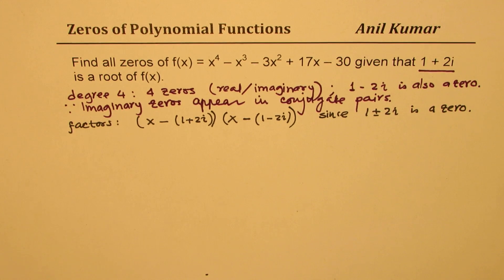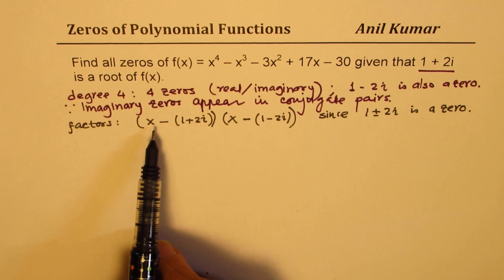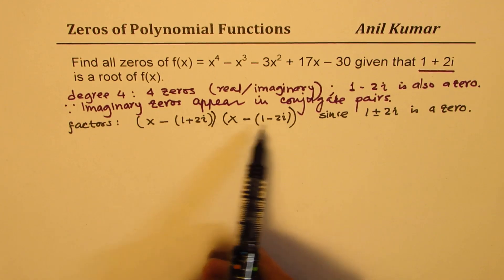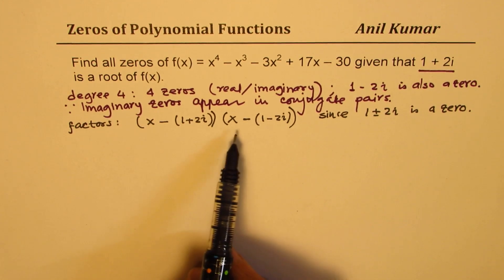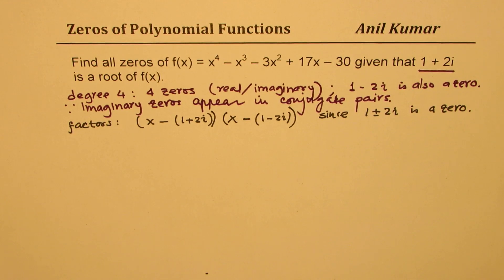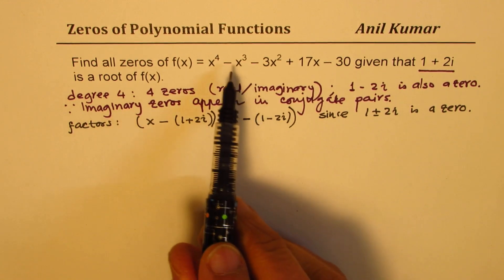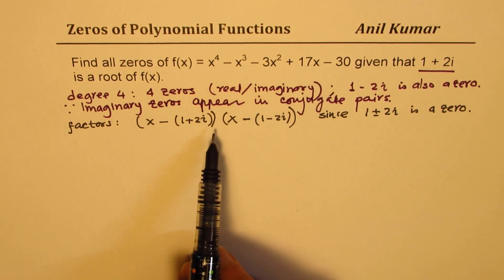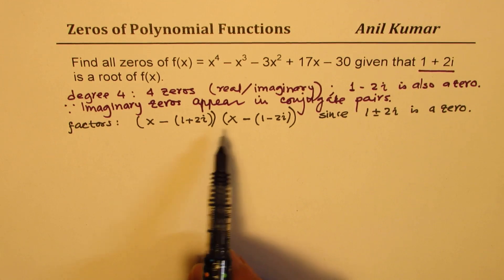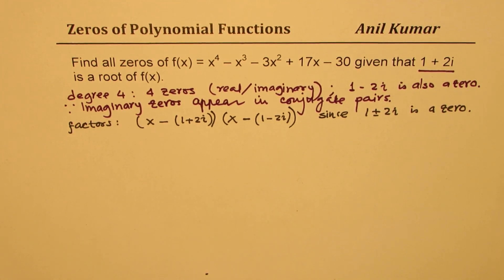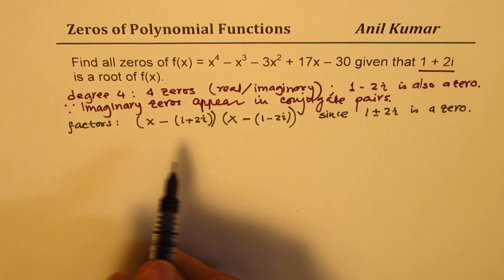So what we can do here is we can expand this factor, and then we'll come out with a quadratic polynomial, dividing the given polynomial by that quadratic polynomial. We can be in a position to find the other roots. So let us expand this.